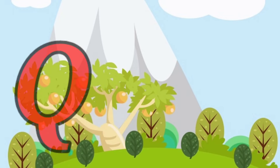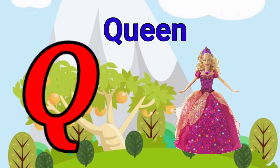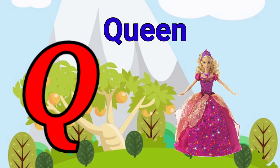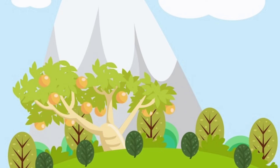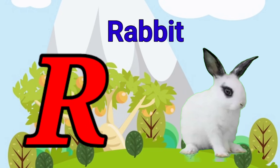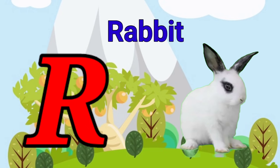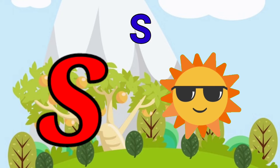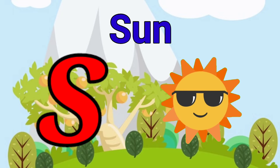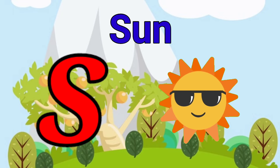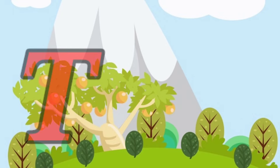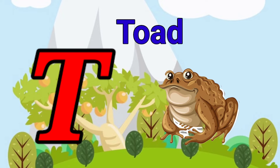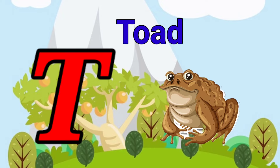Q is for queen, k-k-queen. R is for rabbit, r-r-rabbit. S is for sun, s-s-sun. T is for toad, t-t-toad.